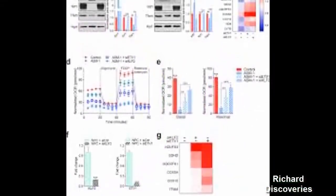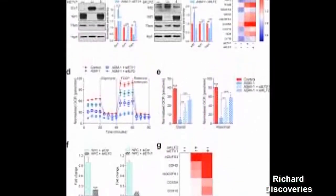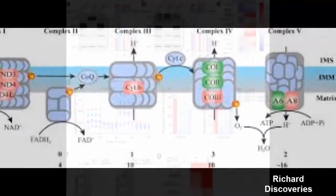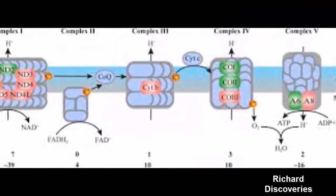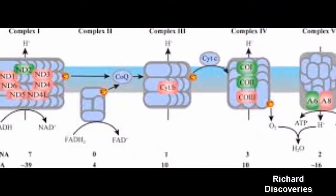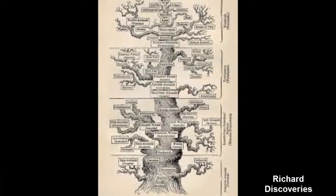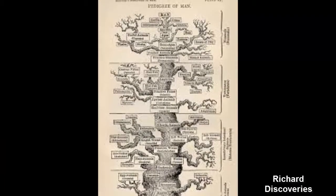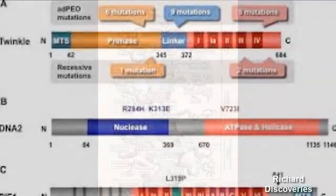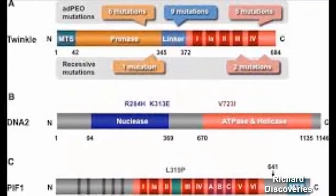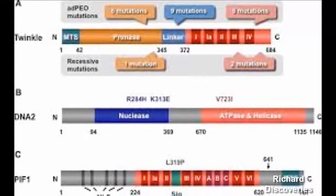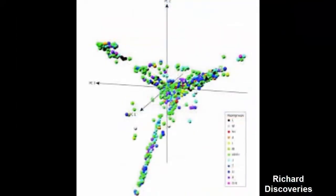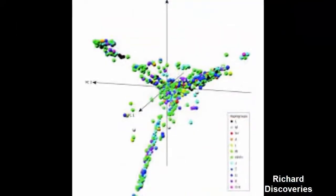They then estimated the yearly mutation rate on the Y-chromosome by calibrating it with a known event, the human settlement of the Americas that occurred about 15,000 years ago. Mutations shared by all Native Americans today must have existed prior to the peopling of the continents, whereas many of those that vary among indigenous American populations arose during the past 15,000 years.